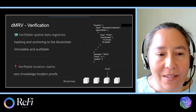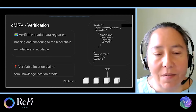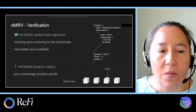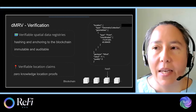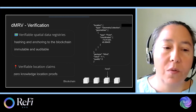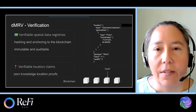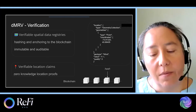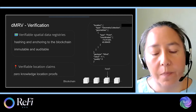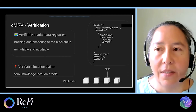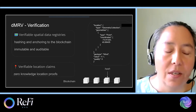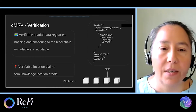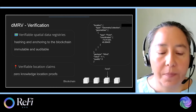There are also verifiable location claims, where we're using ZK proofs to verify the location but not necessarily showing the exact location of a particular person and where they were.